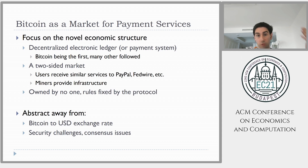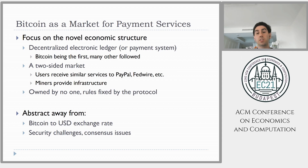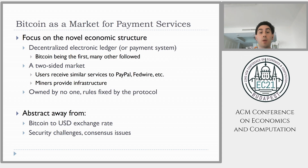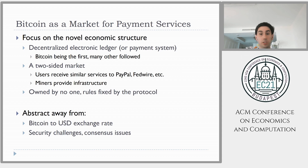Instead of having a firm that provides payment services, you have something much more like a competitive market. Users get services like any other payment system, but the services are not provided by a firm — they're provided by anybody who wants to. You can just download software and become a miner, become part of the network of computers that runs the backend of Bitcoin. All those computers are collectively part of the protocol. The protocol is a set of code that dictates rules for the system, and nobody owns it. For the purpose of this talk, we'll think of it as immutable, and that gives us a very different market structure.